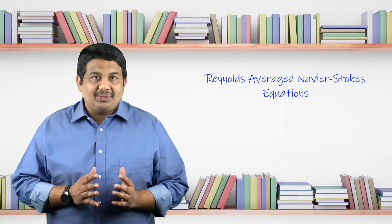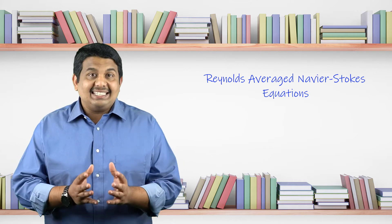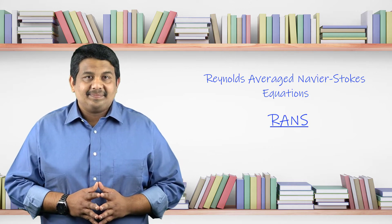Osborne Reynolds recached the Navier-Stokes equations using this decomposition, and these equations are called the Reynolds averaged Navier-Stokes equations, or RANS equations in short. These equations describe the mean fluid flow, and we will soon see why and how turbulence comes into picture.